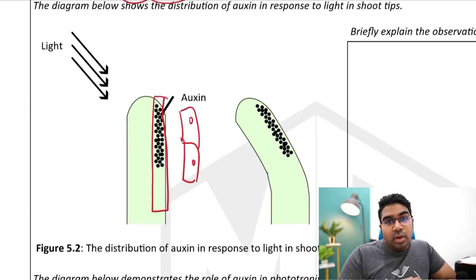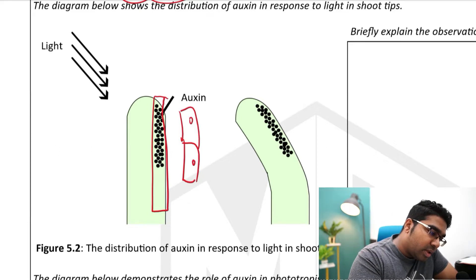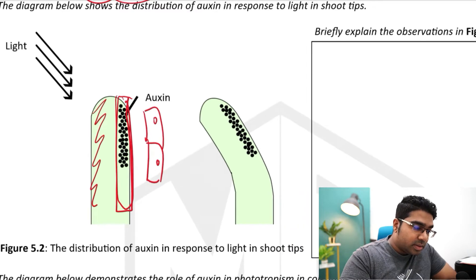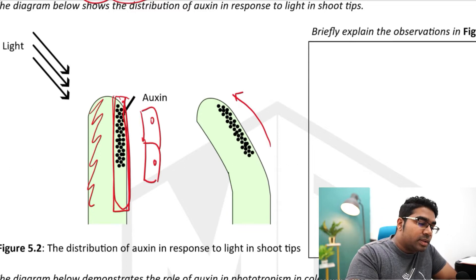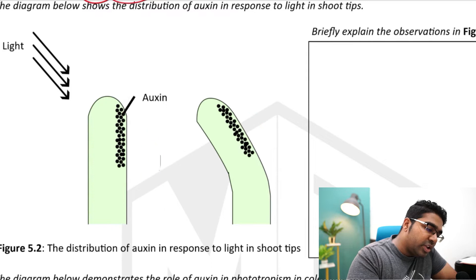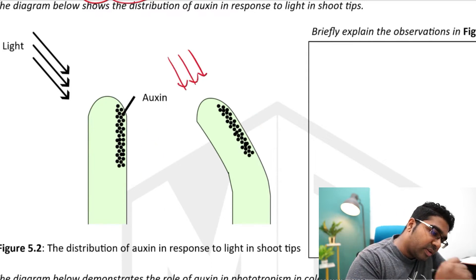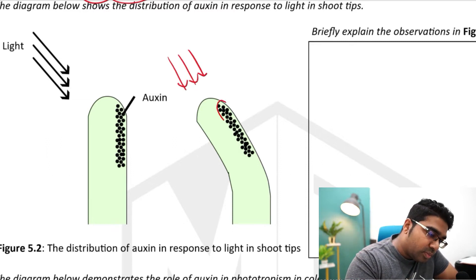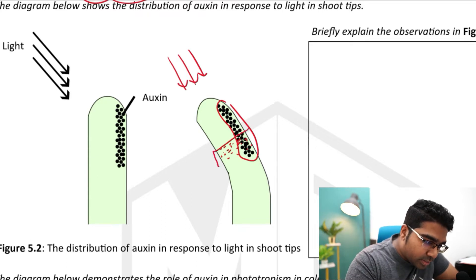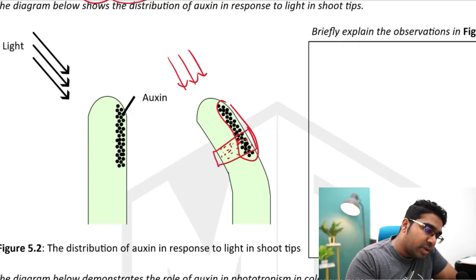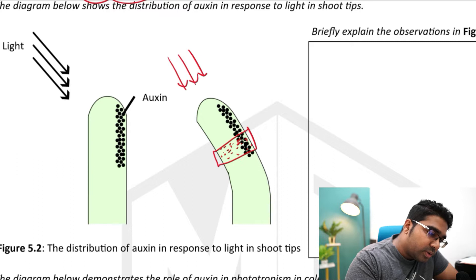Auxin promotes cell elongation. When elongation only happens at a high rate on one side of the shoot tip, that side will become longer compared to the other side. The overall effect is that it causes the shoot tip to bend towards the side without auxin — this is how it bends towards the light. After that, light is still coming from the same direction, auxin continues moving away, and the plant continues growing towards the light.